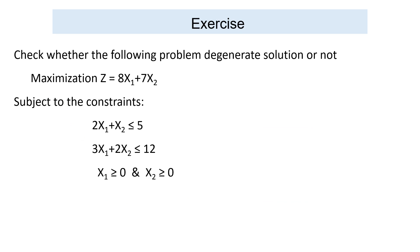Try this exercise: check whether the following problem has a degenerate solution or not. Find the solution using the simplex method. If a basic variable has a value of 0, the solution is degenerate; otherwise it is non-degenerate. Alternatively, if the minimum ratio values are equal, degeneracy will occur. If you have any problems or comments, please write in the comment box.